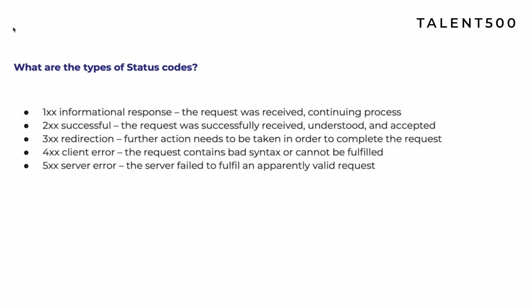The 1xx series contains status codes 100–199, 2xx contains 200–299, and so on. The 1xx series is an informational response — the server is trying to inform you something, like the request was received and the process is continuing. When you get a 2xx series, that means successful — the request you sent has been processed successfully and the server has provided a response.